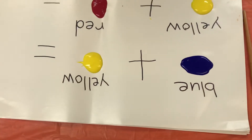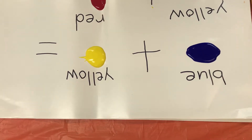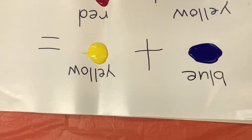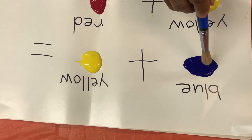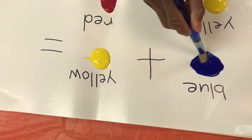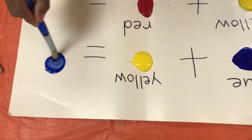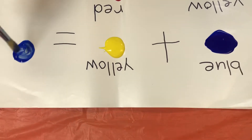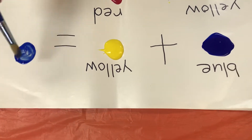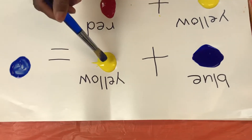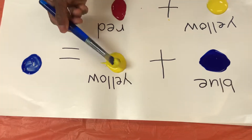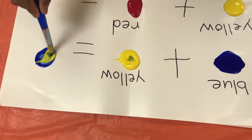So first, we have blue plus yellow equals — friends, what color do you think blue and yellow make? Miss Widow's going to put some blue paint over there, and then she's going to put some yellow paint. What color do you think we're going to make, friends, with blue plus yellow? Let's see.